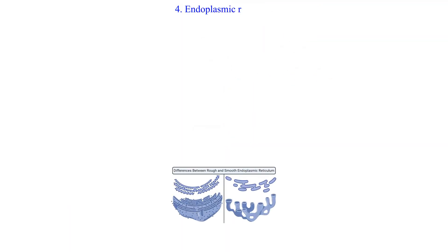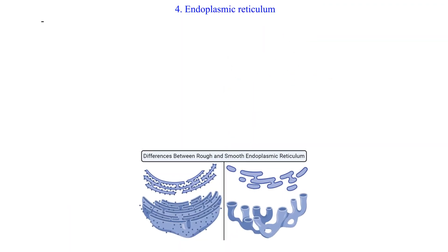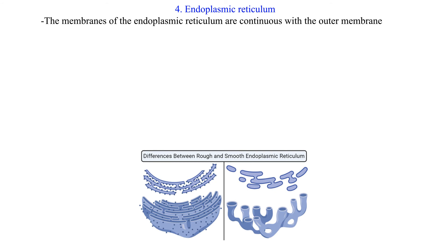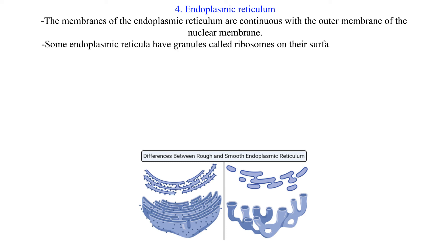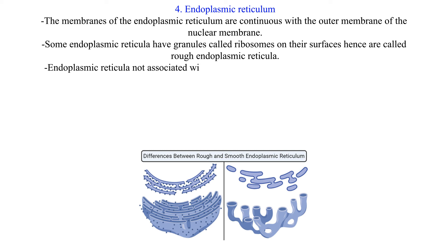The endoplasmic reticulum is continuous with the outer membrane of the nuclear membrane. Some endoplasmic reticula have granules called ribosomes on their surfaces, hence are called rough endoplasmic reticula. Endoplasmic reticula not associated with ribosomes are called smooth endoplasmic reticula.